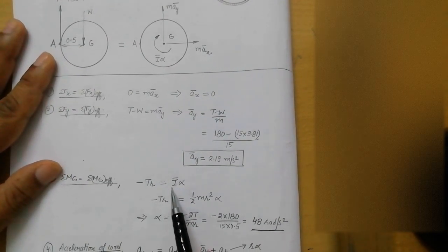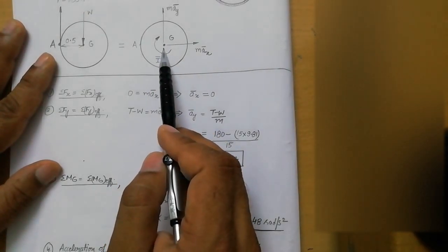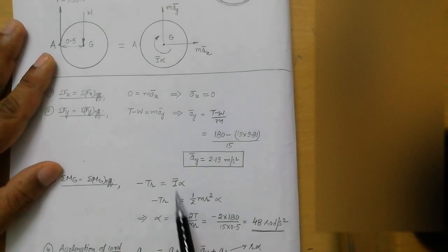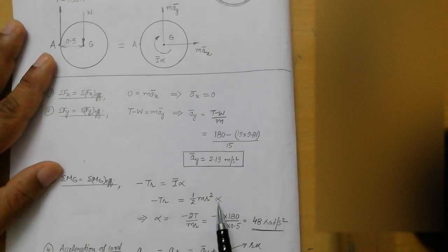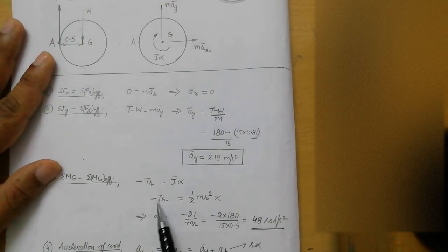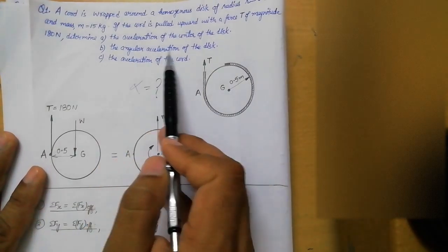Now we substitute values. The moment of inertia of a circular disk about its center is given by i-bar equals one-half m r squared. Replacing this into the equation and solving for alpha, we get alpha equals negative 2T divided by m·r. With T equal to 180, m equal to 15, and r equal to 0.5, we calculate the angular acceleration alpha — that is the answer to the second part of the question.